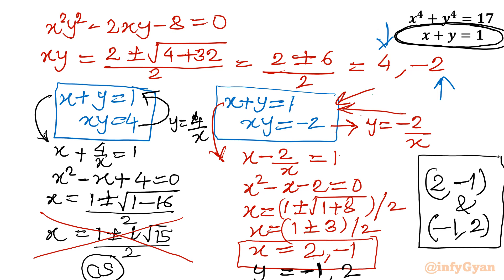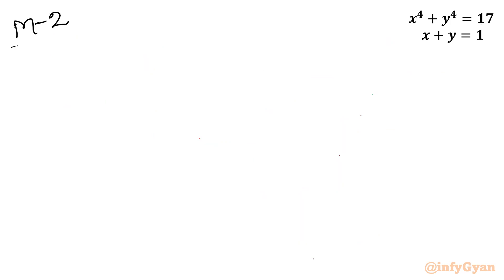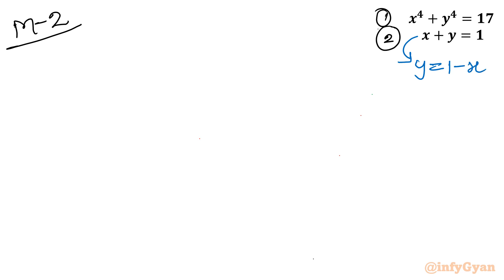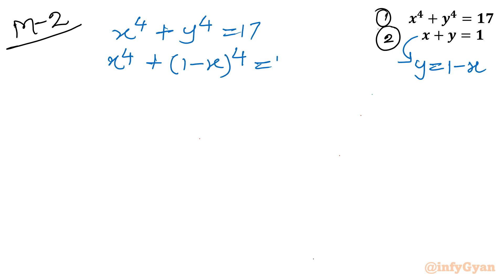Those are the ultimate solutions for the given system of equations. Now let us consider Method 2, the expansion method. From Equation 2, y = 1 − x. Substituting into Equation 1 gives x⁴ + (1 − x)⁴ = 17.